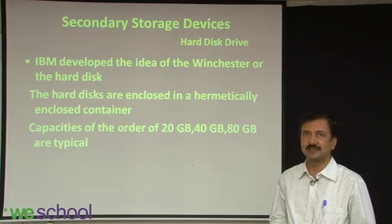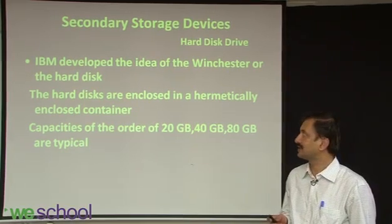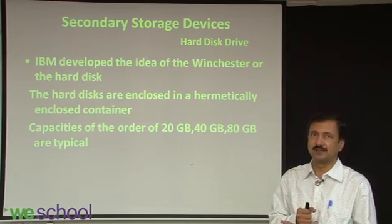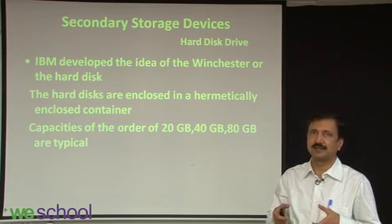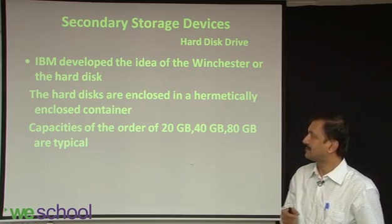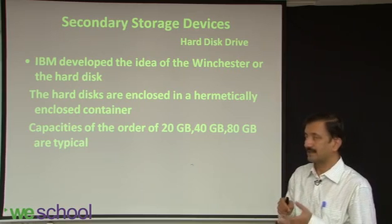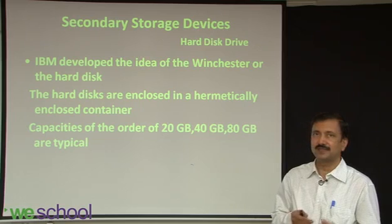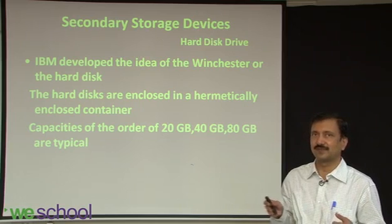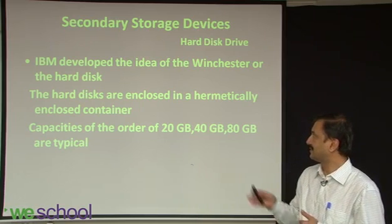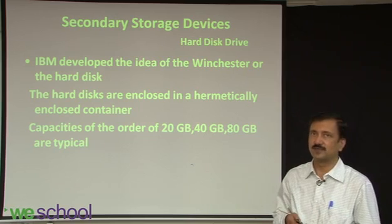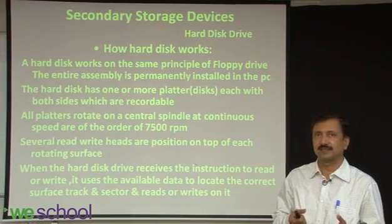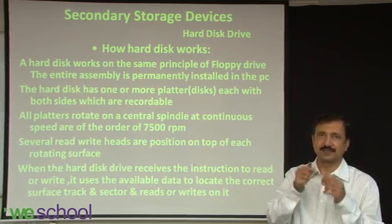The second major device we talk about is the hard disk. It was IBM which first introduced what they called the Winchester hard disk — a set of disks on a single spindle, put in a hermetically sealed, airtight box. It moves continuously on that spindle. Since it's permanently fitted into the computer, it provides online access of data as and when required. Hard disk capacities have increased significantly — from 20 GB in desktop machines to now increasingly large capacities of 120 GB and upward. A hard disk works on the same principle as a floppy, except there are multiple layers one atop the other with a central spindle on which they rotate.